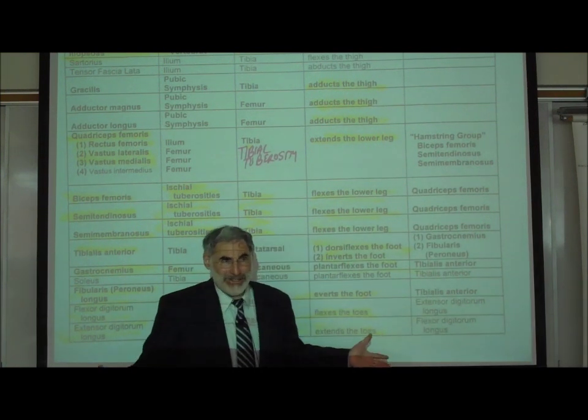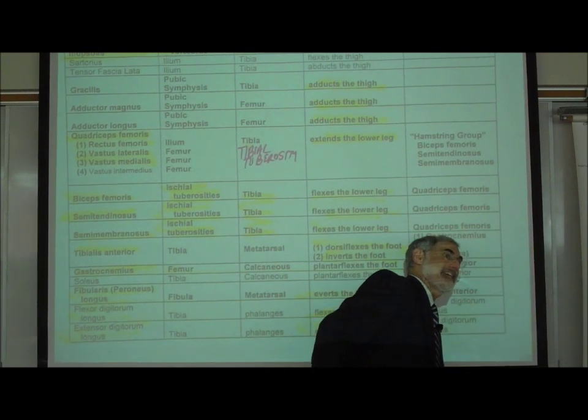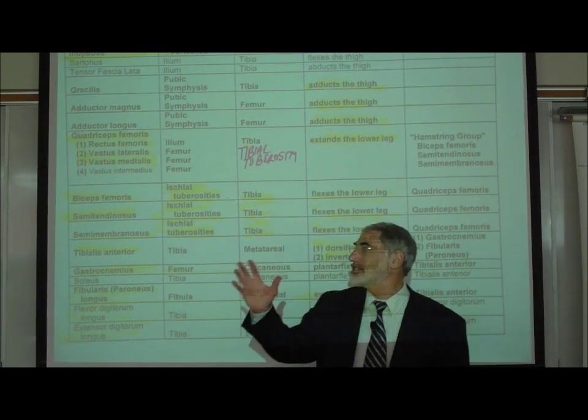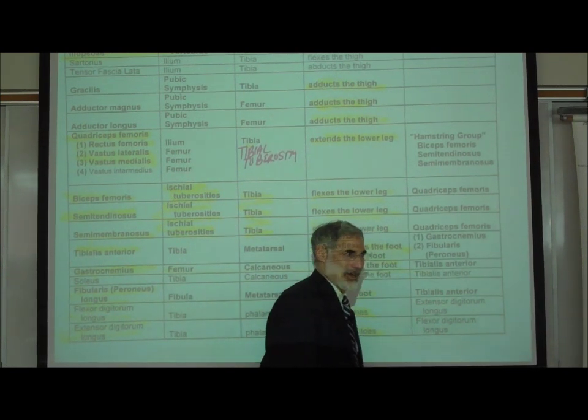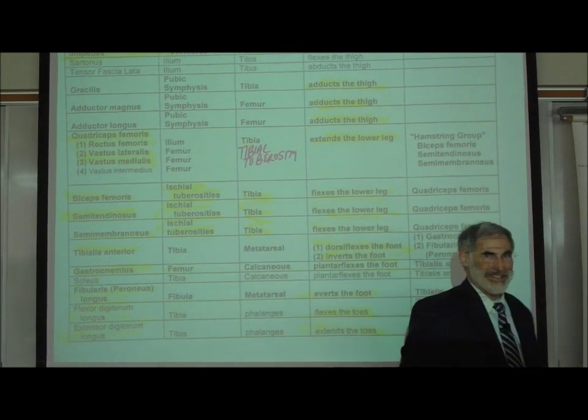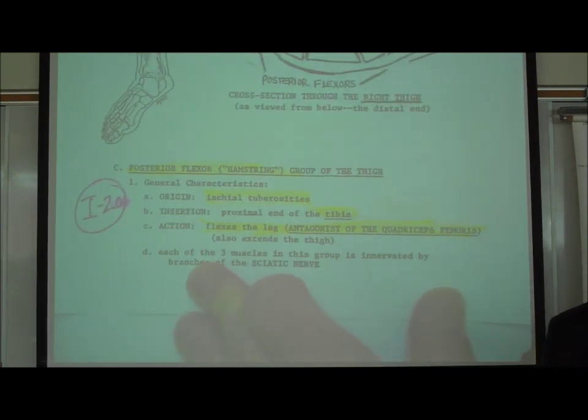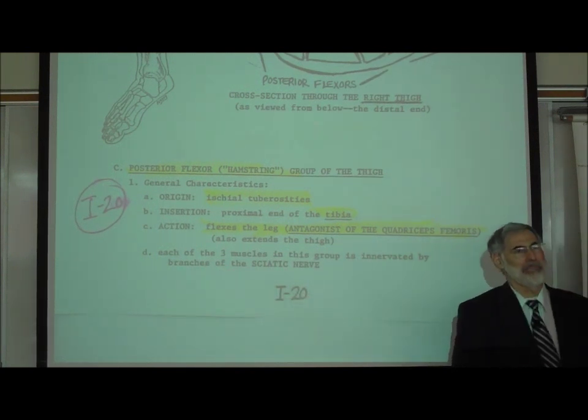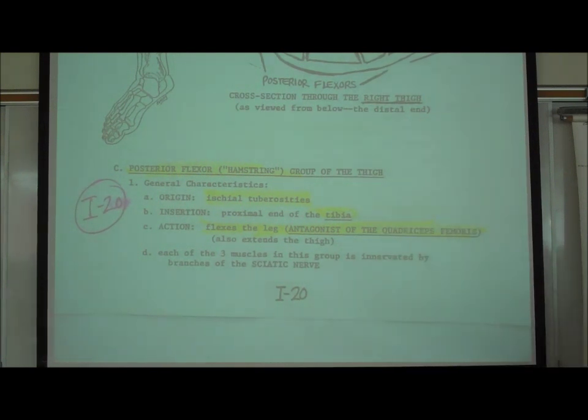So again, to practice, just simply say quadriceps as you extend your lower leg, and say biceps femoris, which is the biggest of the three hamstring muscles, to flex your lower leg. So quadriceps femoris, biceps femoris. We had mentioned the hamstrings on the bottom of I-20. Even though I'm using that word hamstring, even though it's very common, on a test don't tell me hamstring. Write down biceps femoris, semi-membranosus, semi-tendinosus. Those are the hamstring flexors. And that takes us to I-21.